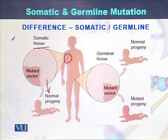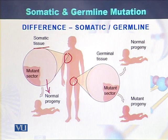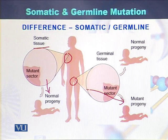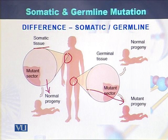On the other hand, germline mutations occur in the sex cells. These kinds of mutations transfer from one generation to the next generation. However, it depends on the type of allele. If the allele is mutated, then the progeny would be mutated. While if the normal allele is transferred from the parents to the offspring, the progeny will be produced as normal.